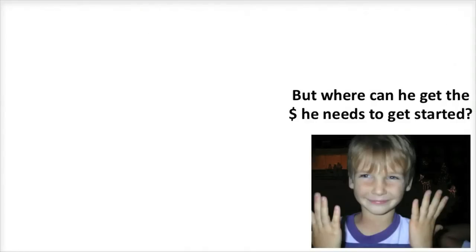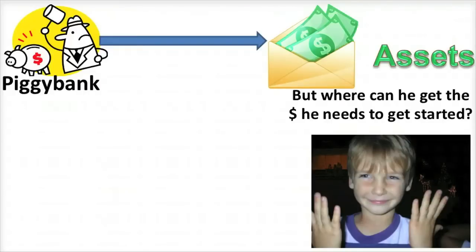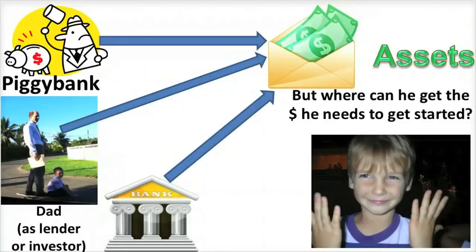But where can he get the money he needs to get started? He needs some assets. He could break open his piggy bank, take the cash and coins out and contribute them to Utah Straw Hat Company, thereby becoming an owner. He could also go to his dad, who could act as a lender providing loans or as an investor becoming a partner. Spencer could also go to the local bank and ask for a loan. Utah Straw Hat Company will need assets funded through either debt or equity.